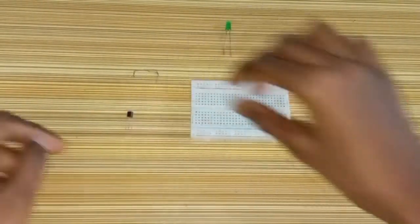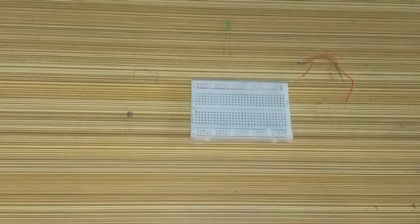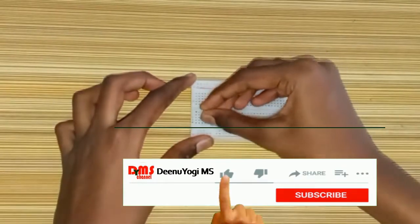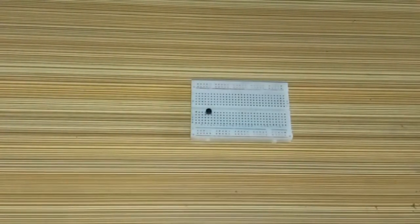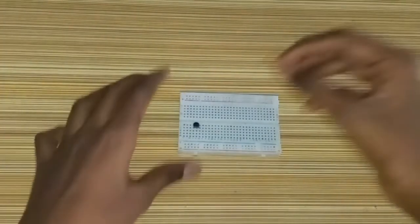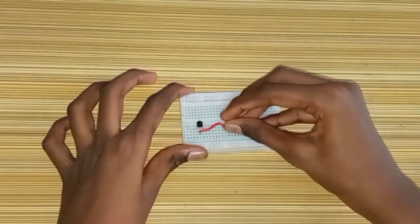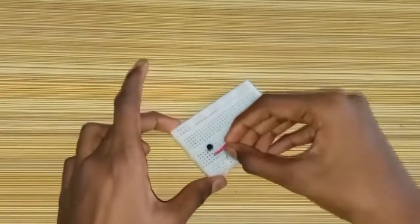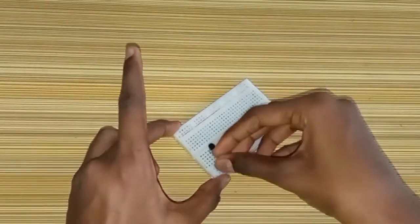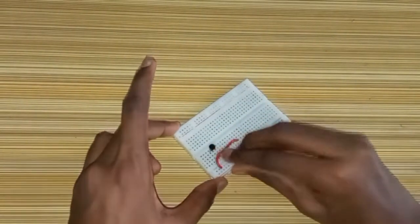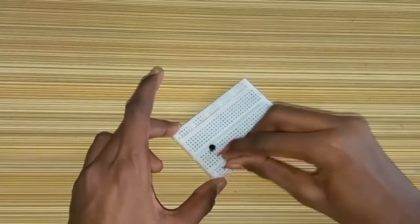Now we'll make all connections on this breadboard. First, take the BC547 transistor and connect it to the breadboard with the flat side facing you. Take a wire and connect it from the base of the transistor to the negative rail. Take another wire and connect it from the emitter to the negative rail.